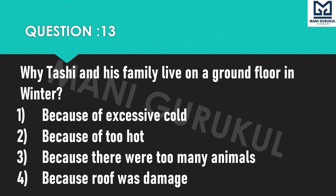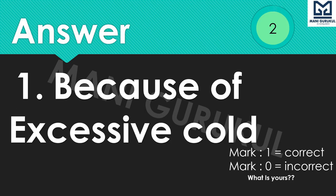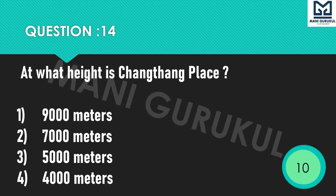Answer is 1st: Because of excessive cold. Question 14: At what height is the Changtang place? Options: 1st 9,000 meters, 2nd 7,000 meters, 3rd 5,000 meters, 4th 4,000 meters. Your time starts now.